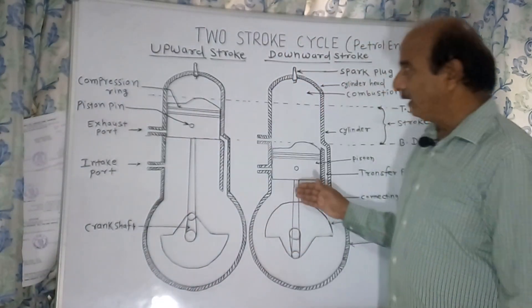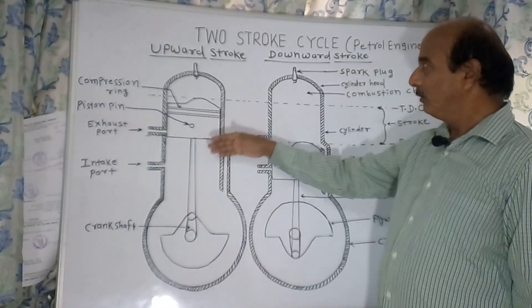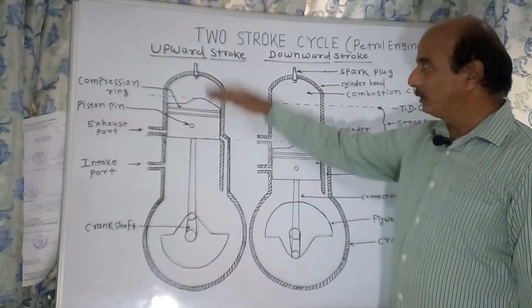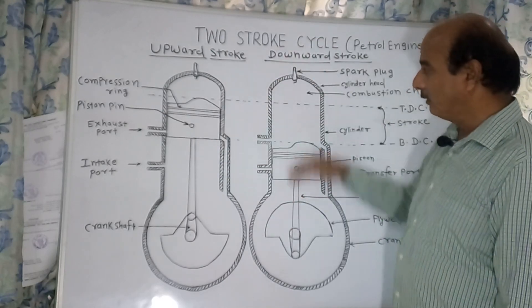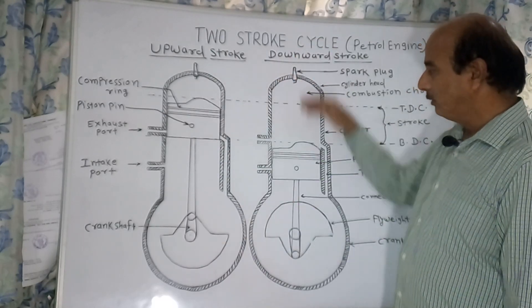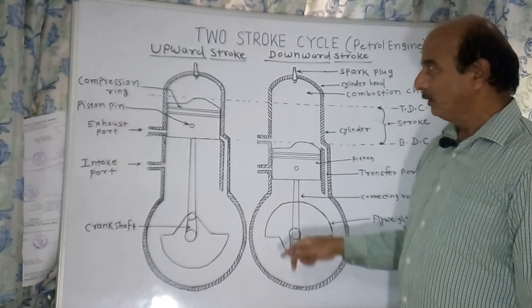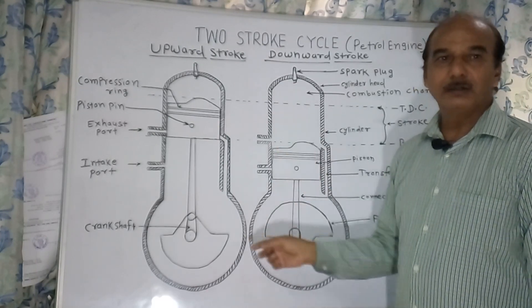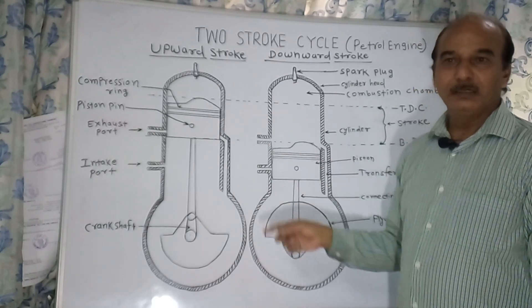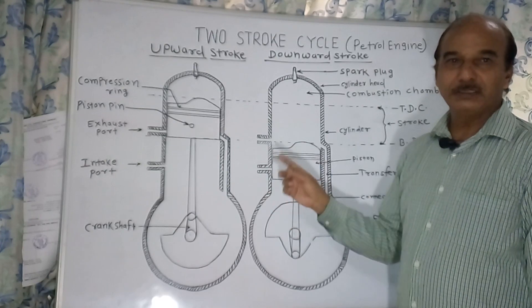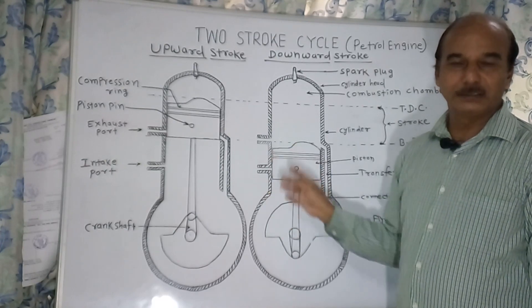The cycle repeats — upward stroke, downward stroke, upward stroke, downward stroke — continuously. Like this, the engine will be in continuous rotation and keep running.